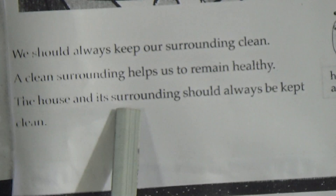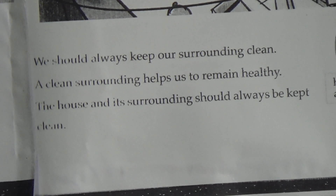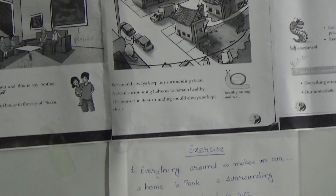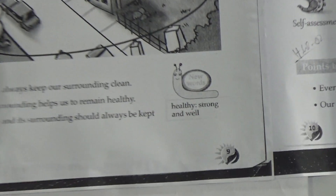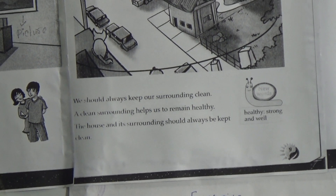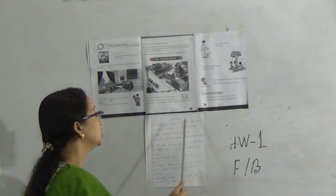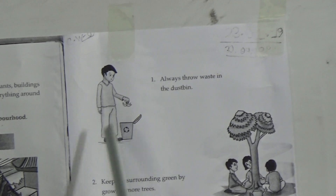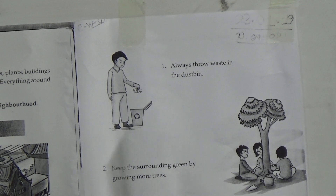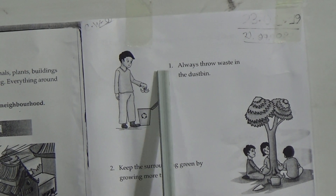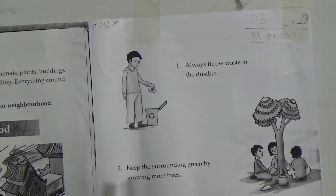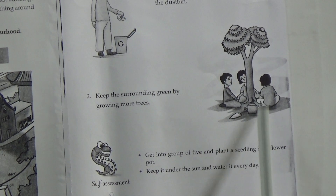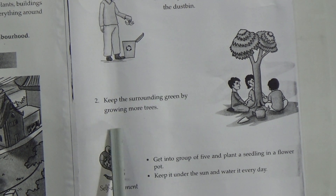We learn one new word in this chapter: 'healthy.' Healthy means strong and well. The house and its surroundings should always be kept clean. Here we see one person throwing dust in the dustbin — so number one: always throw waste in the dustbin. Number two: we see boys and girls sitting under a tree and planting trees, so keep the surrounding green by growing more trees.